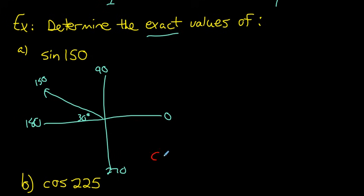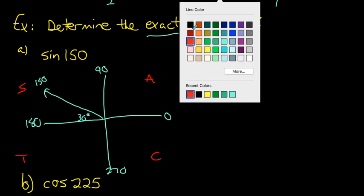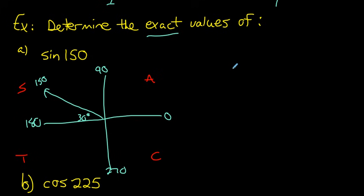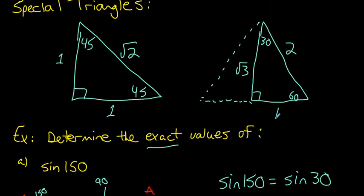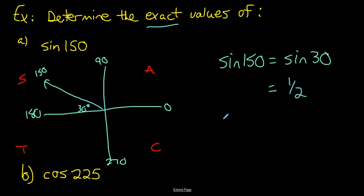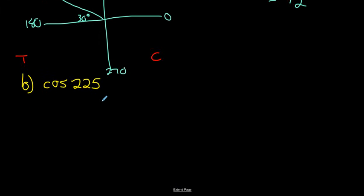Using the CAST rule, because we're in the sine quadrant, the trig ratio stays positive. So sine 150° equals sine of its reference angle, sine 30°. From our special triangle, sine 30° equals opposite over hypotenuse, which is 1/2. Now for cos 225°: 225° puts the terminal arm in the third quadrant, and the reference angle between the terminal arm and the x-axis is 45°.